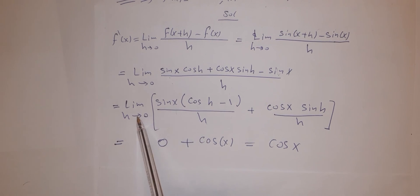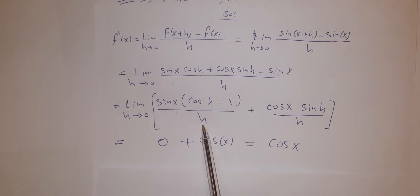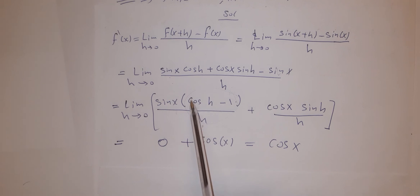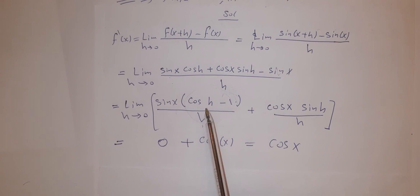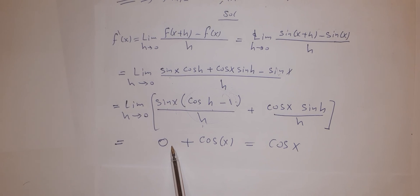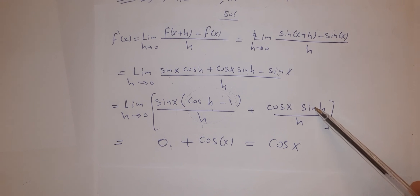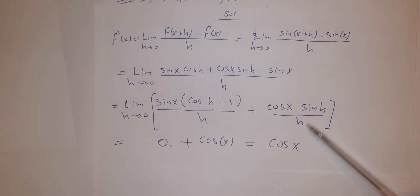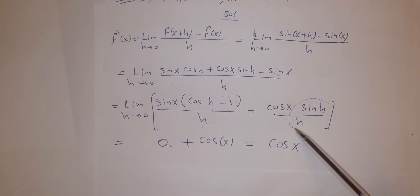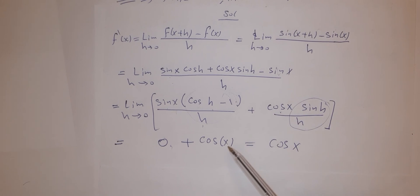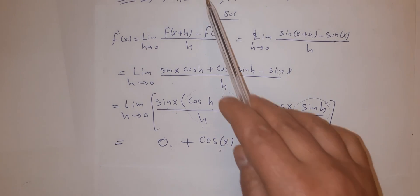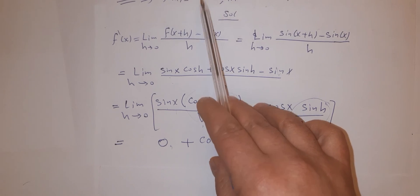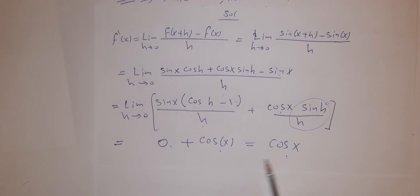Using the known limits: [cos(h) − 1] / h → 0 as h→0, so that term gives 0 · sin(x) = 0. And sin(h)/h → 1 as h→0, so the second term gives 1 · cos(x) = cos(x). Therefore the derivative of sin(x) is cos(x).